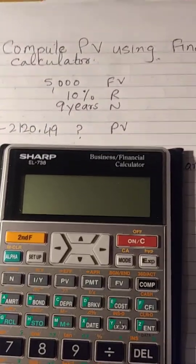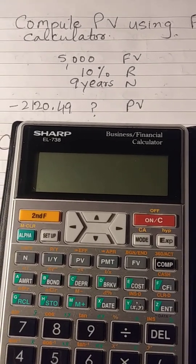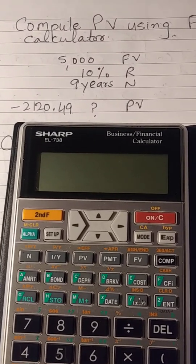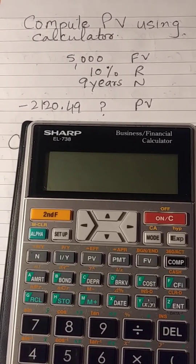So the numbers I have: a future value of 5000, rate means R, discount rate is 10%, and time is 9 years denoted by N.